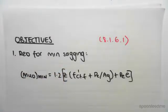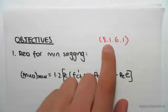So as we said in the previous video, for the minimum sagging, we find a formula in the code. It's given in 8.1.6.1.